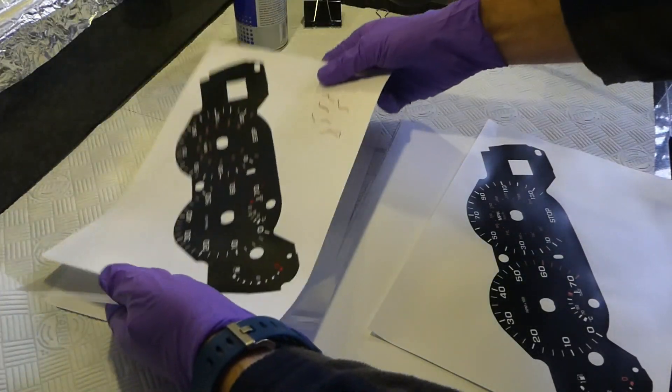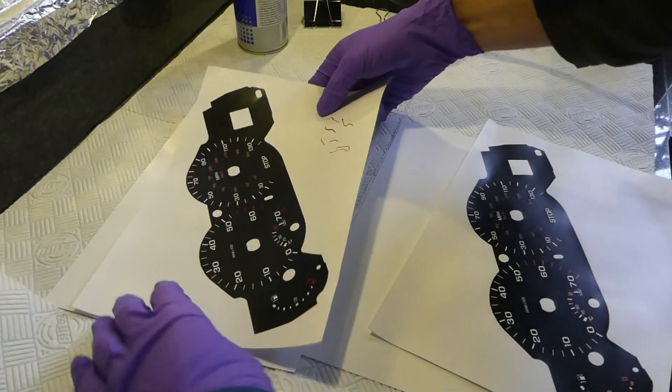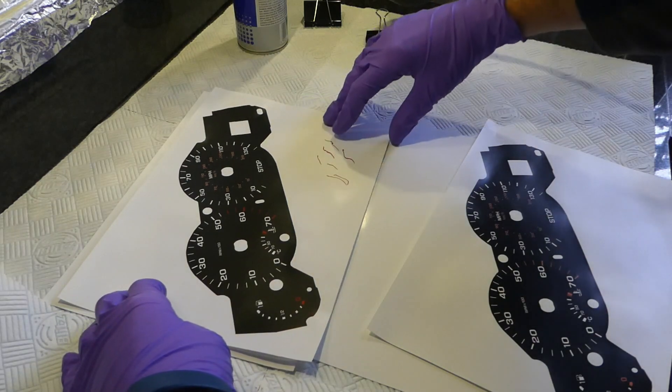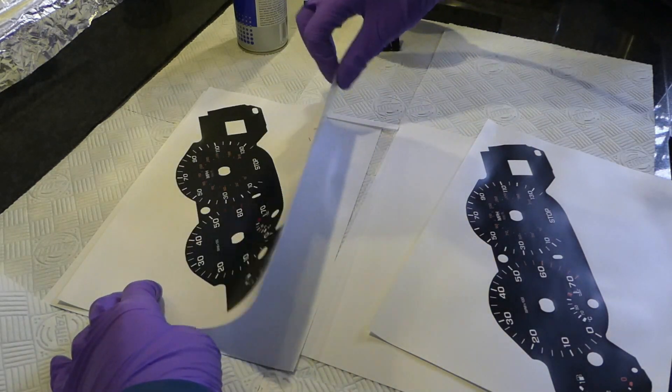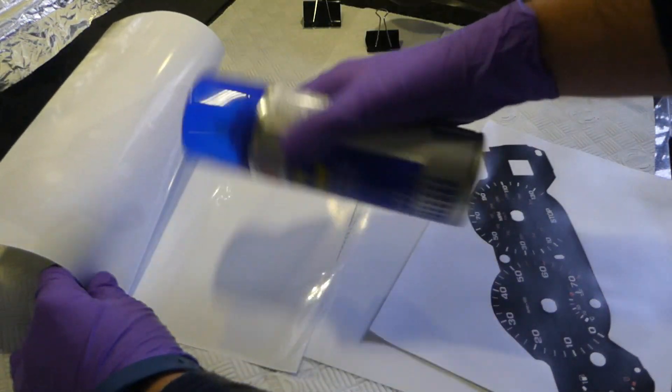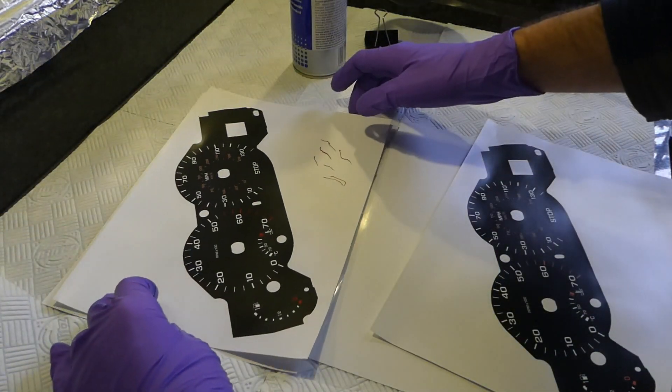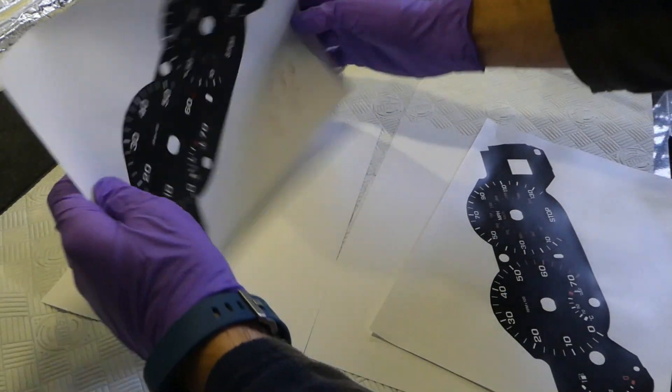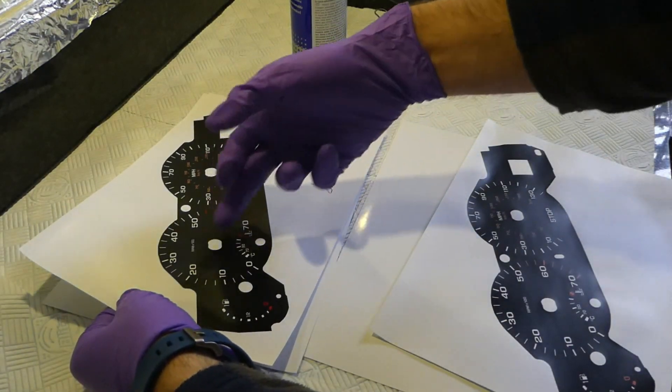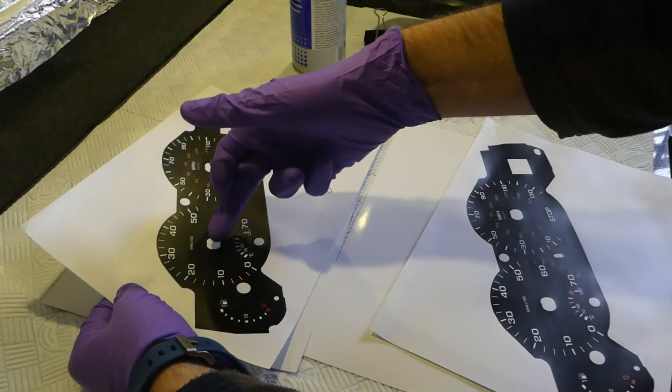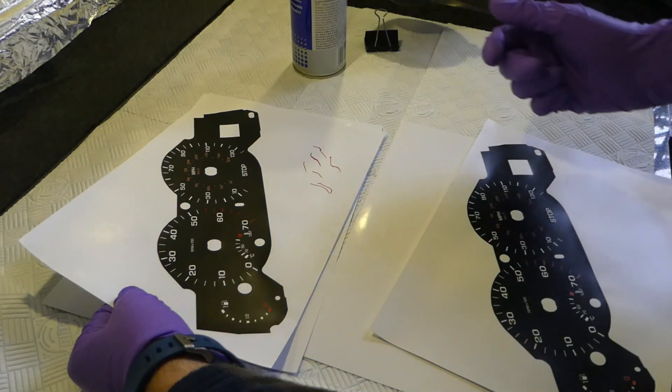Get them together. Align them. And I would just spray it. And glue them together. Put them in the book for overnight. And then cutting out those. The bits for the needle. And for the LCD screen.